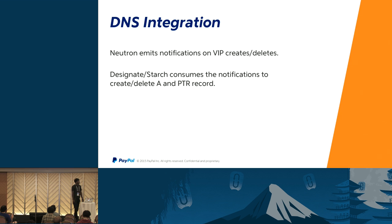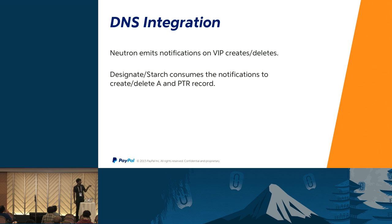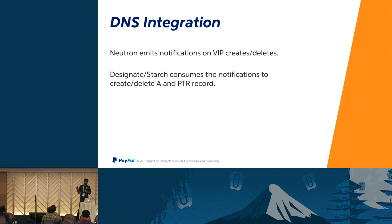For DNS integration: whenever you create a VIP, the corresponding A record and PTR record must be created in DNS. We use the same message bus for that. We have an internal product — codename Stars. In some availability zones we have Stars running and in others we have Designate, which consumes this notification and creates the corresponding A and PTR records in the backend DNS servers.